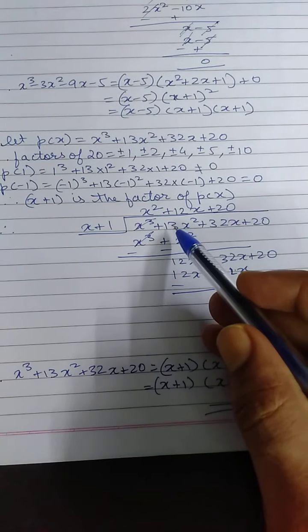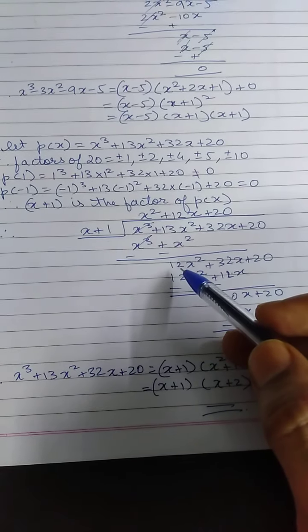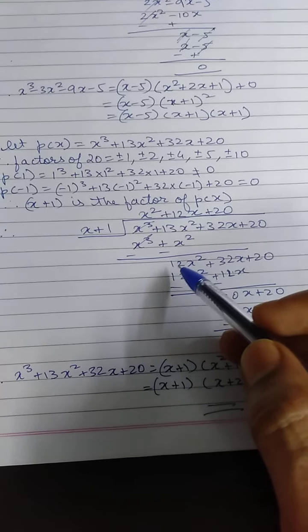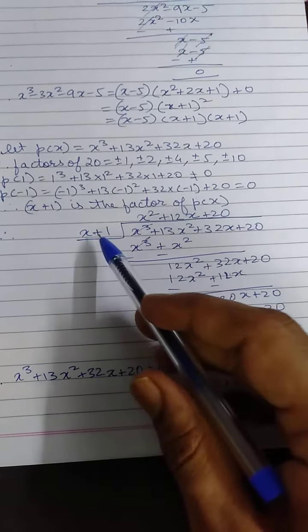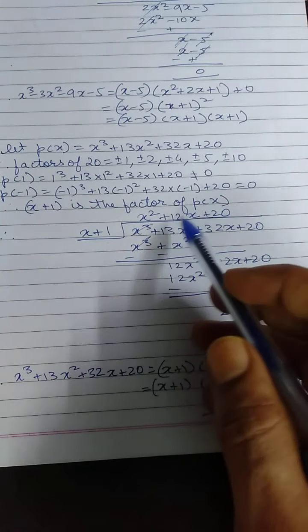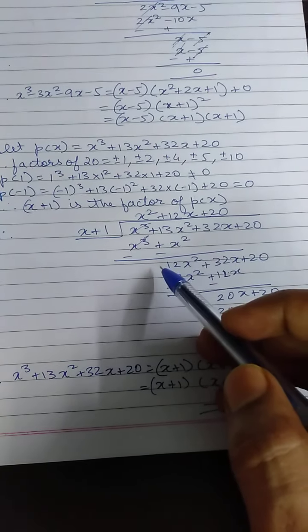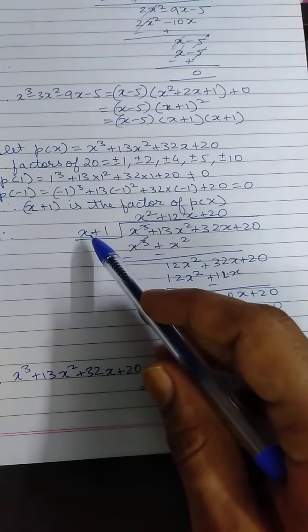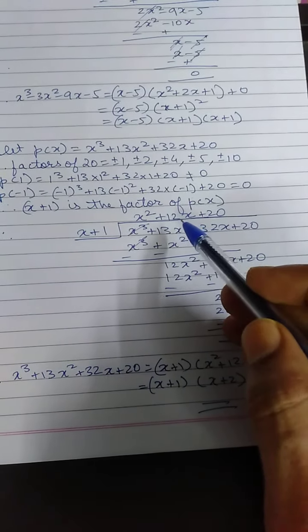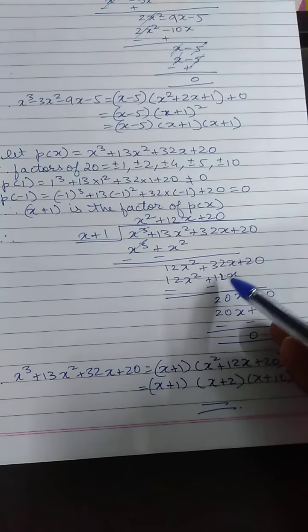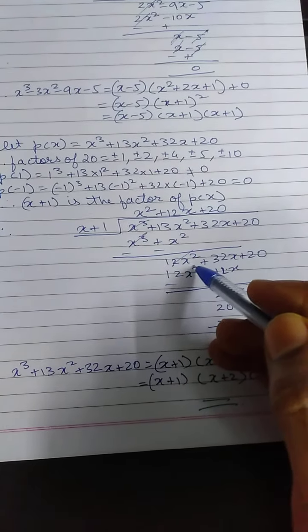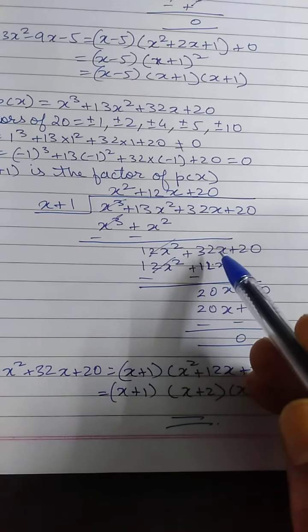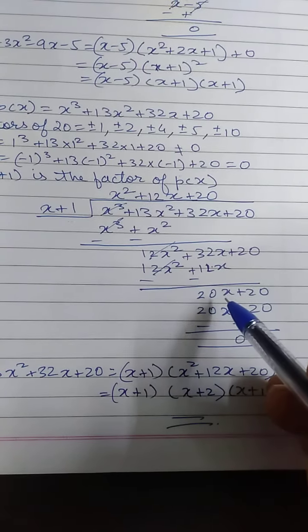x cube and x cube gets cancelled. Sign changes and this is 13 minus 1 will give you 12. Now my first term is 12x square. What should I multiply in x? I should multiply as 12x with positive sign. Plus 12x into x will give me 12x square. Then 12x into 1 is 12x. You change the sign. This 12x square and 12x square gets cancelled. You have remained with 32x minus 12 which will give you 20x.